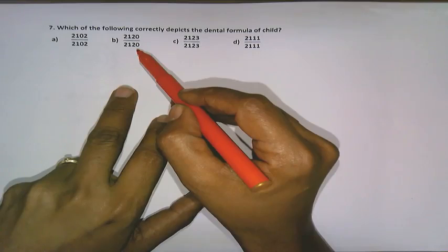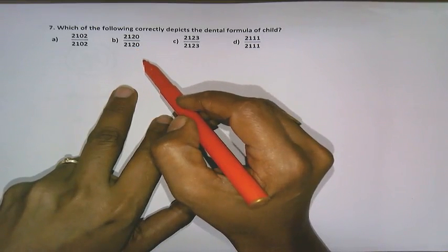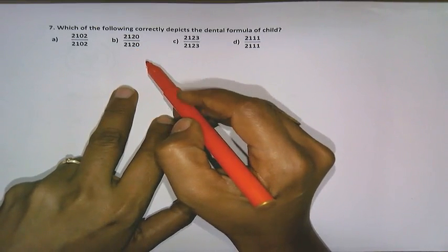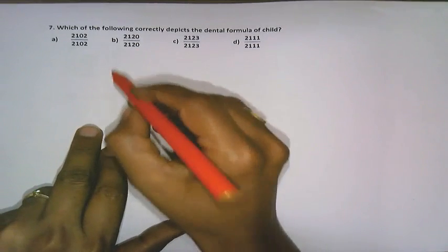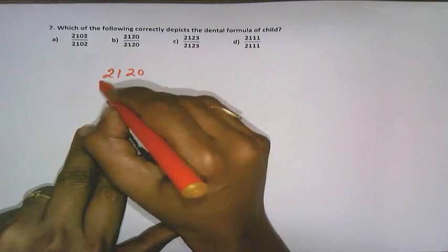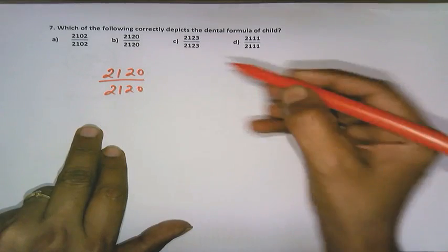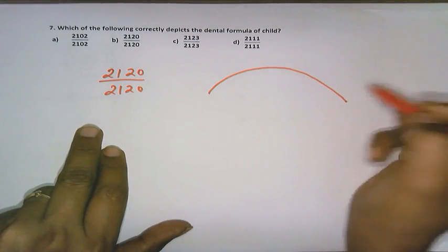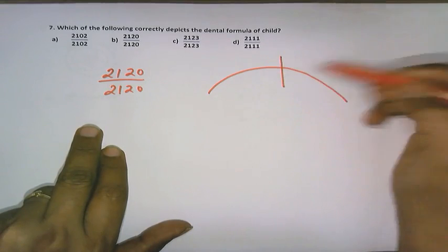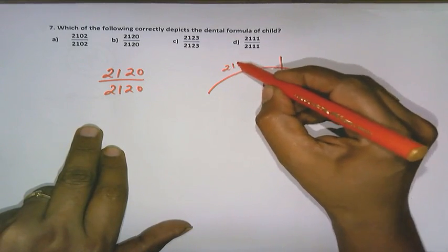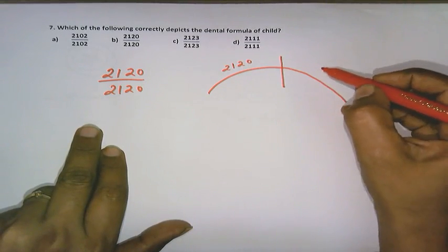Later, we are also familiar that milk dentition contains only 20 teeth. So let us see this. The component which is given as 2, 1, 2, 0 by 2, 1, 2, 0 represents the dentition on the upper jaw. If you are taking one half of the upper jaw comprises of 2, 1, 2, 0. Similarly the other half, similarly in the lower jaw as well as the other half of the lower jaw.